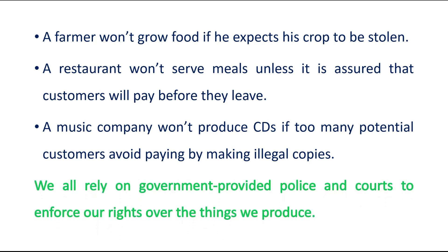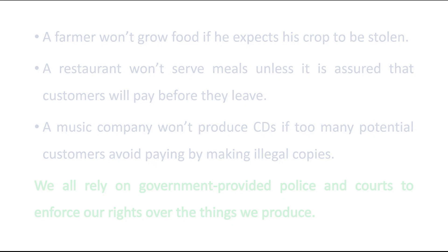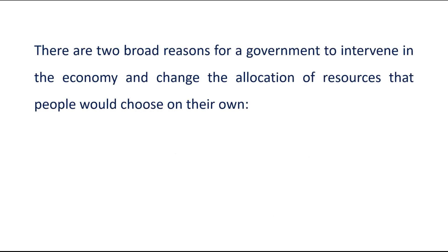Conclusion: We all rely on government-provided police and courts to enforce our rights over the things we produce. There are two broad reasons for a government to intervene in the economy and change the allocation of resources that people would choose on their own.